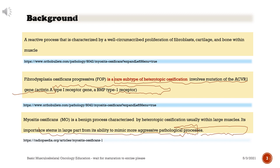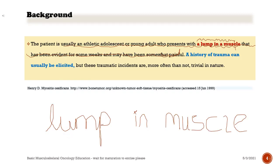Myositis ossificans is a benign process characterized by heterotopic ossification usually within large muscles. Its importance stems in large part from its ability to mimic more aggressive pathological processes. The patient is usually an athletic adolescent or young adult who presents with a lump in a muscle that has been evident for some weeks and may have been somewhat painful. A history of trauma can usually be elicited, but these traumatic incidents are more often than not trivial in nature.